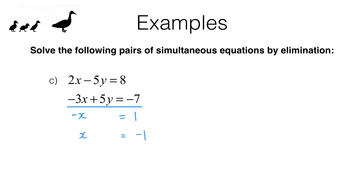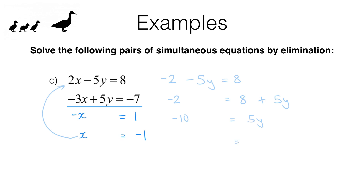We have found X, but we haven't found the full solution set — we also need Y. Substituting X equals negative 1 into the first equation gives 2 times negative 1 minus 5Y equals 8, so negative 2 minus 5Y equals 8. Adding 5Y to both sides gives negative 2 equals 8 plus 5Y. Subtracting 8 from both sides gives negative 10 equals 5Y. So Y equals negative 10 divided by 5, which is negative 2. The solution set is X equals negative 1, Y equals negative 2.